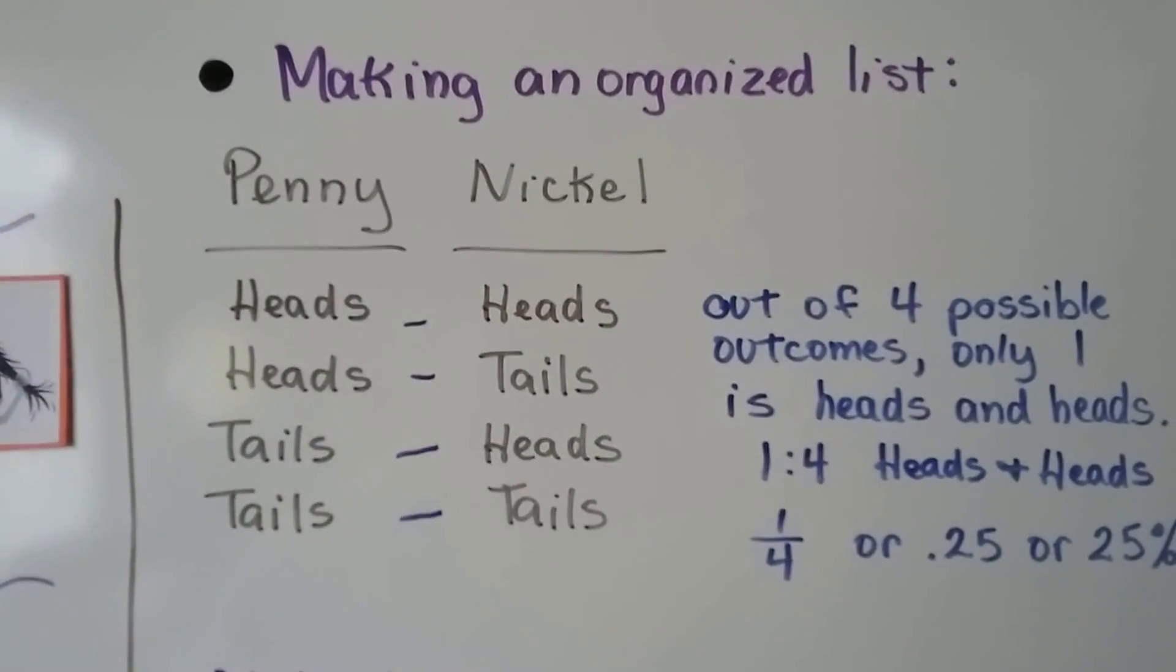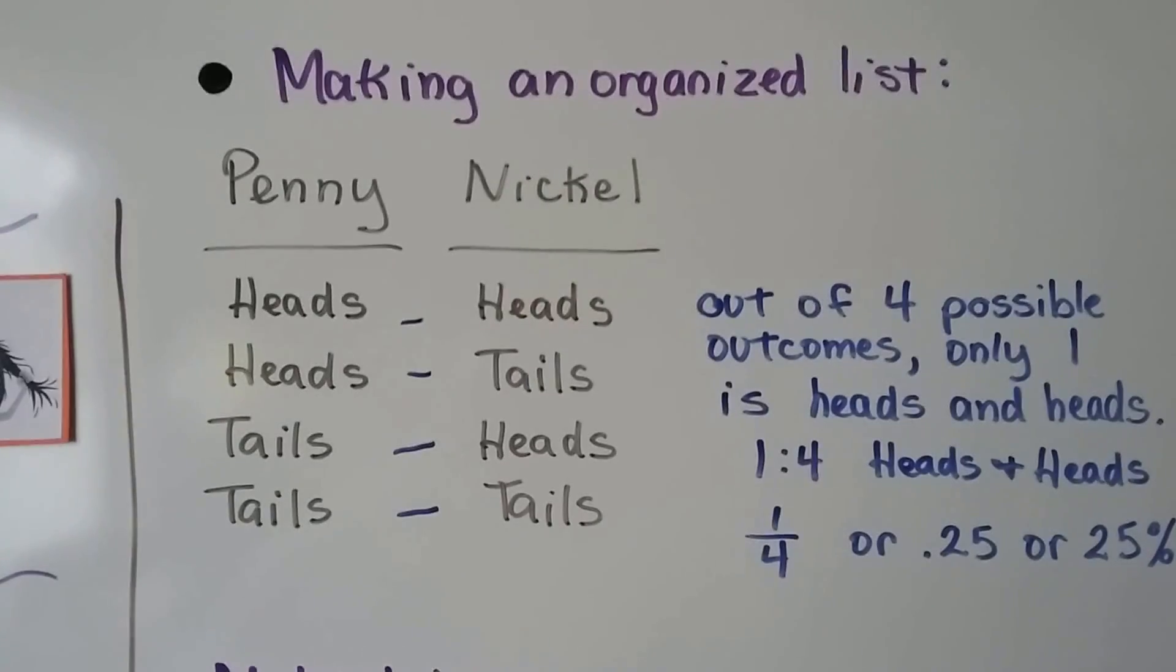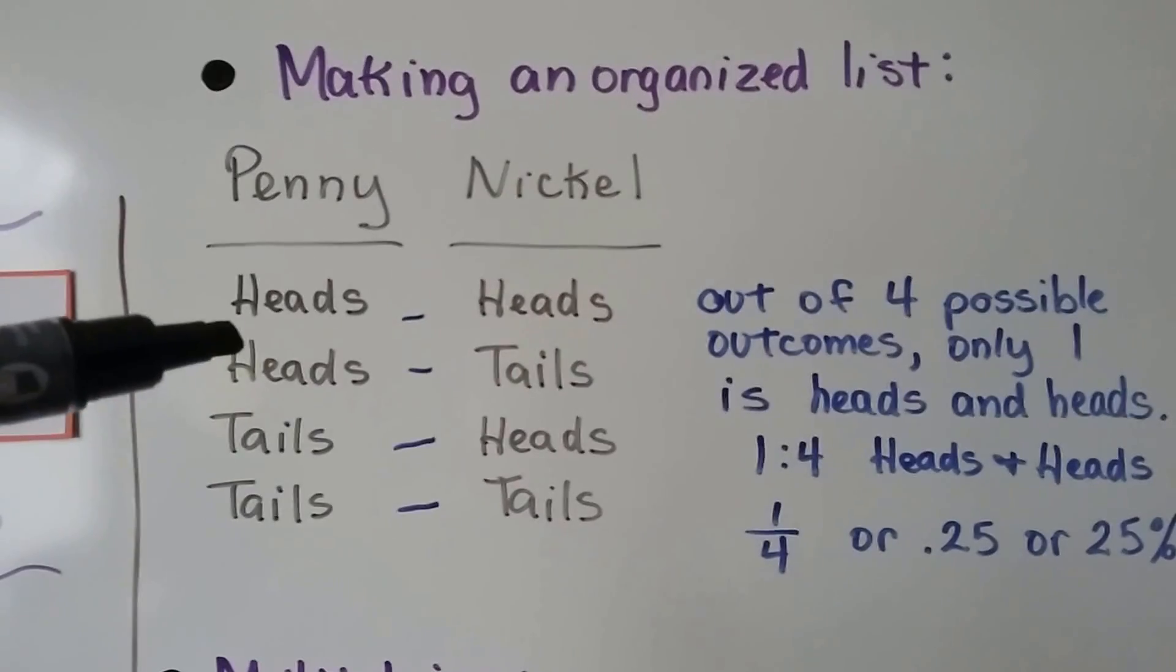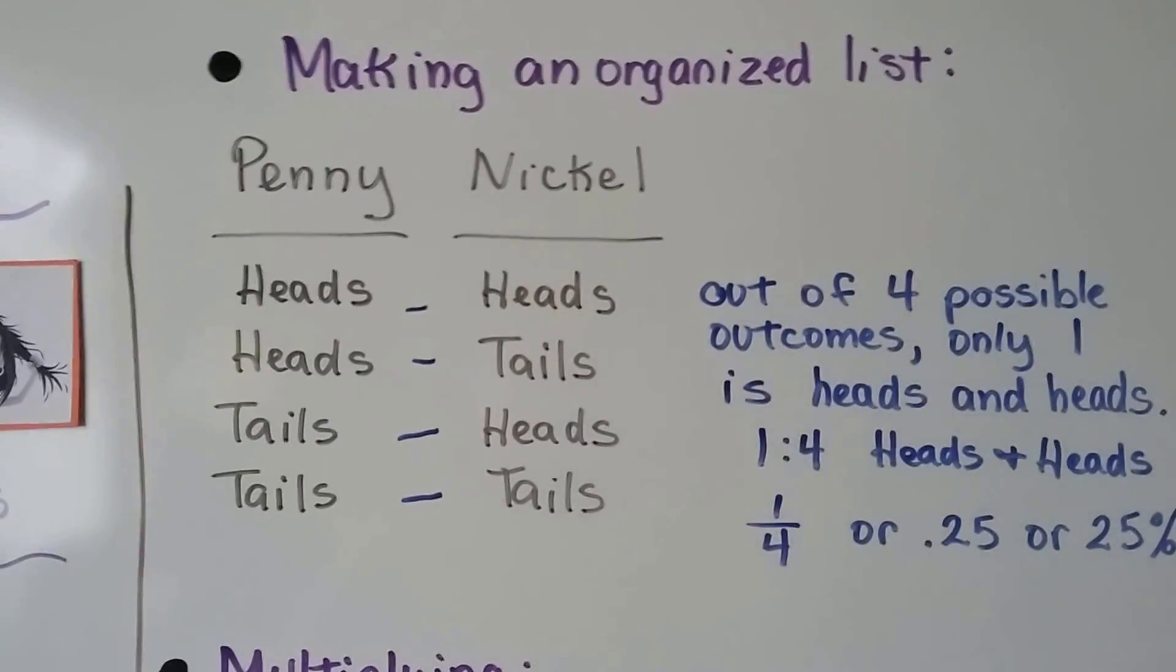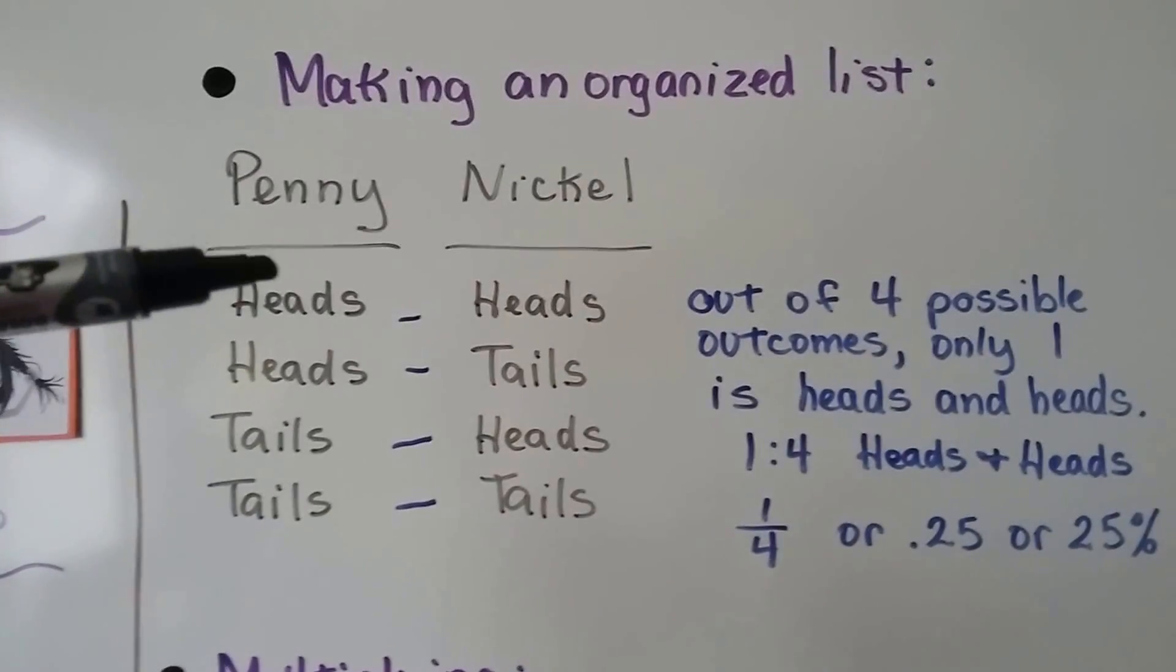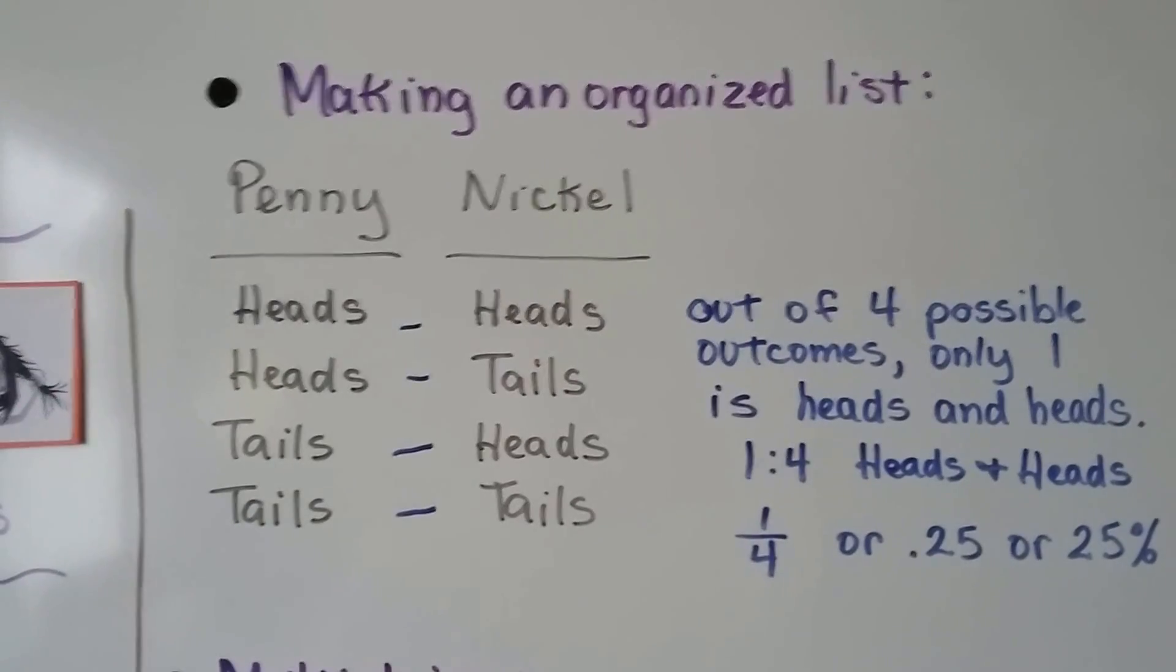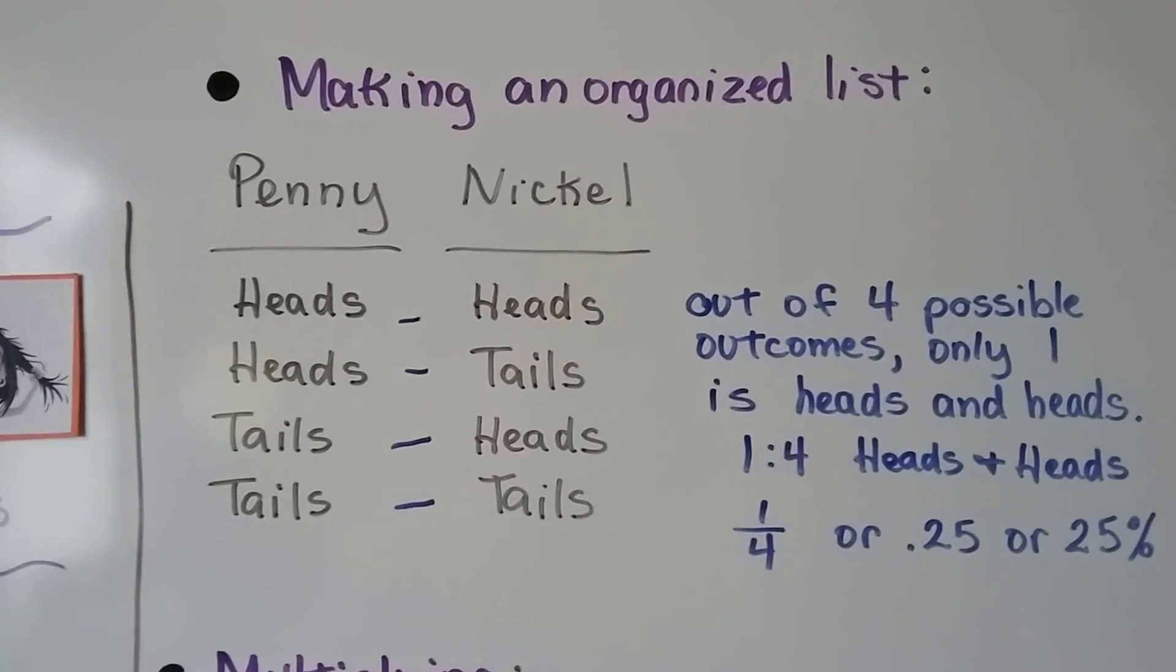Making an organized list, so let's say we're going to flip a penny and a nickel. There's only four possible outcomes. We can have heads-heads, heads-tails, tails-heads, or tails-tails. It's going to be one of these four outcomes. So the possibility of getting heads-heads is one out of four. It's one-fourth or .25 or 25%. We talked about that in the previous videos.